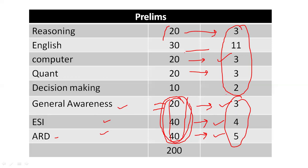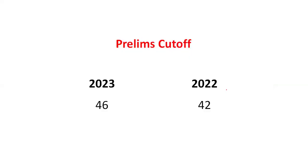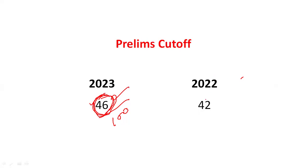Now let's move on to the cutoff. What is the cutoff of this year? This year the cutoff was 46 — 46 out of 100. It was actually 45-point-something, but rounding up it's 46 out of 100. In the last year it was 42. So there is around a three to four marks difference.